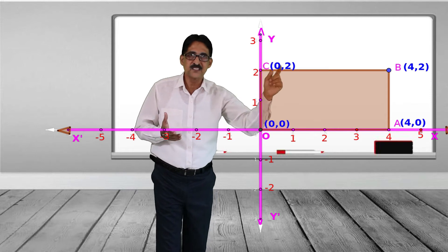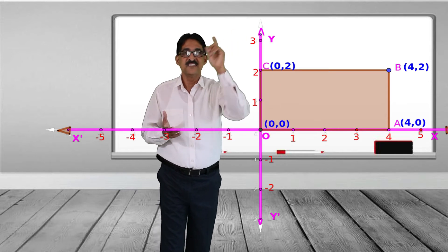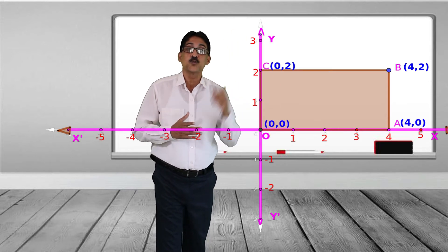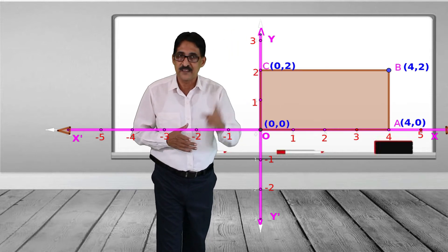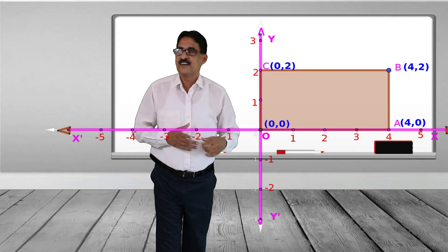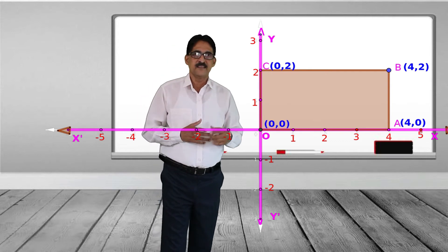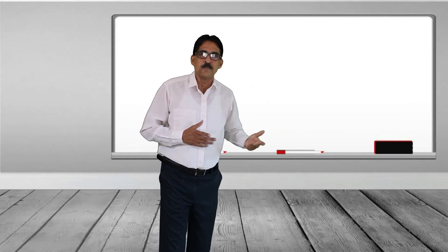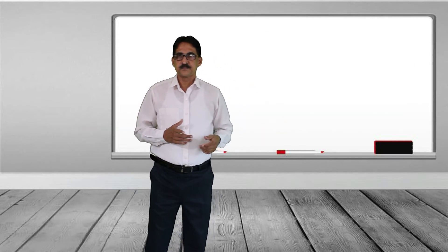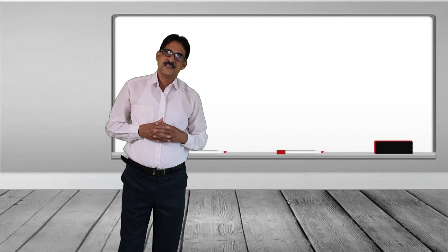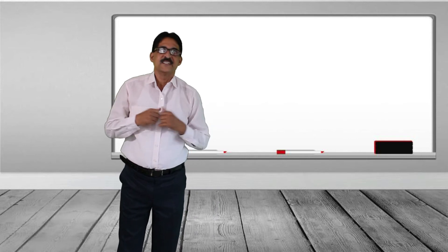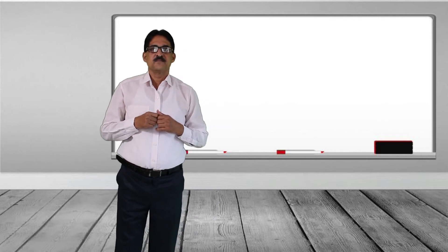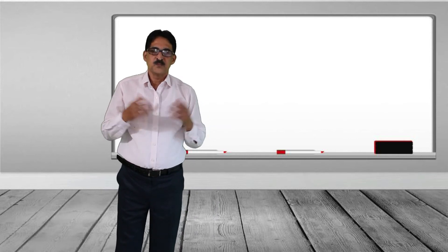So to summarize: O is (0, 0) — the origin, A is (4, 0), B is (4, 2), and C is (0, 2). Now let us do another problem. See the picture.